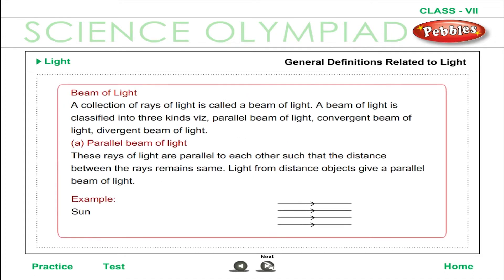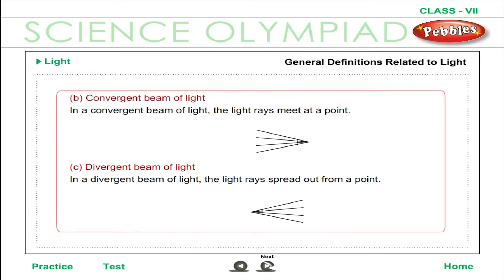Beam of light: a collection of rays of light is called a beam of light. A beam of light is classified into three kinds: parallel beam of light — rays are parallel to each other such that the distance between them remains the same, typical of light from distant objects; convergent beam of light — the light rays meet at a point; and divergent beam of light — the light rays spread out from a point.